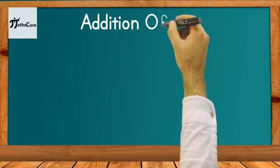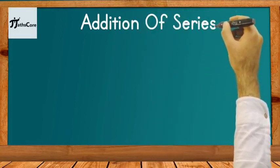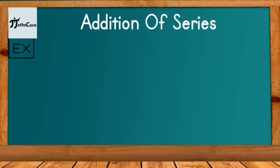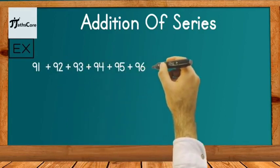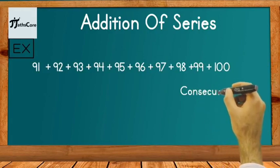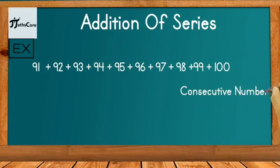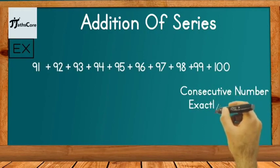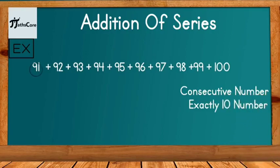Let's solve another example on addition of series. Example is here 91 plus 92 plus 93 plus 94 plus up to 100. You can observe that in this given series all numbers are consecutive numbers and exactly 10 numbers are given there from 91 to 100.